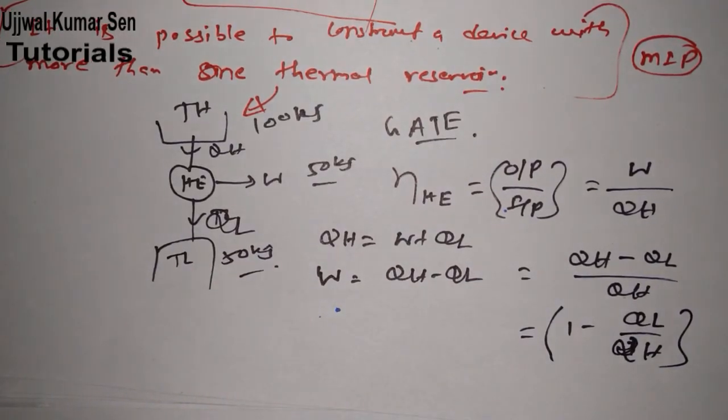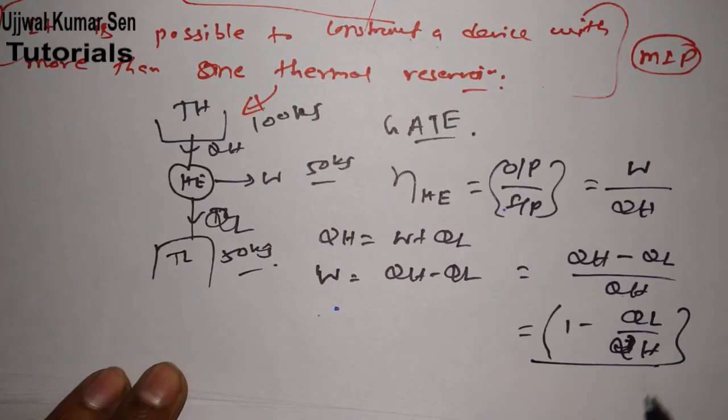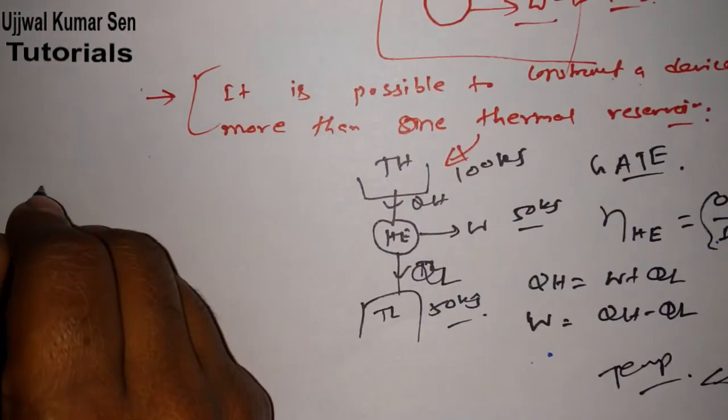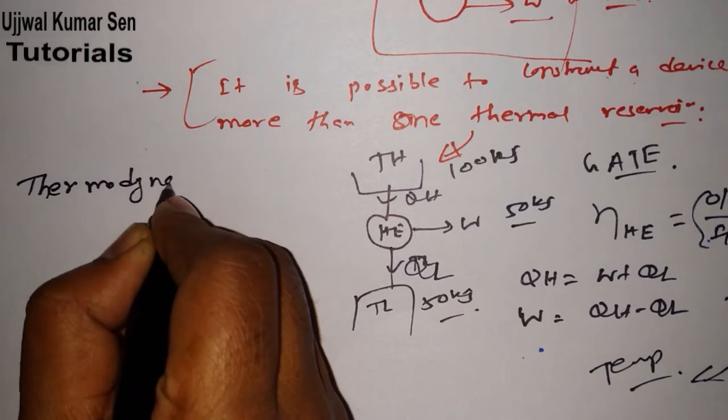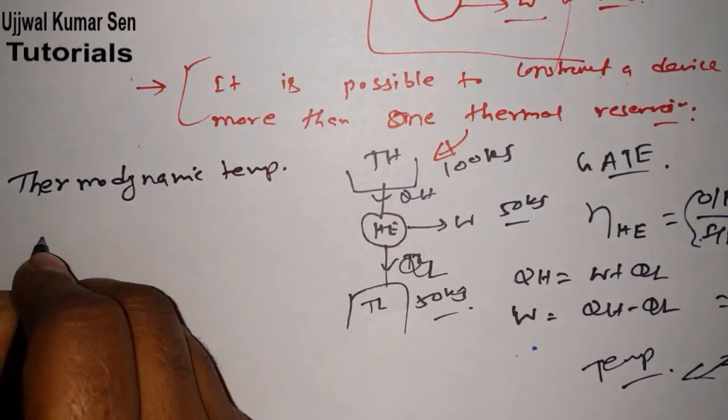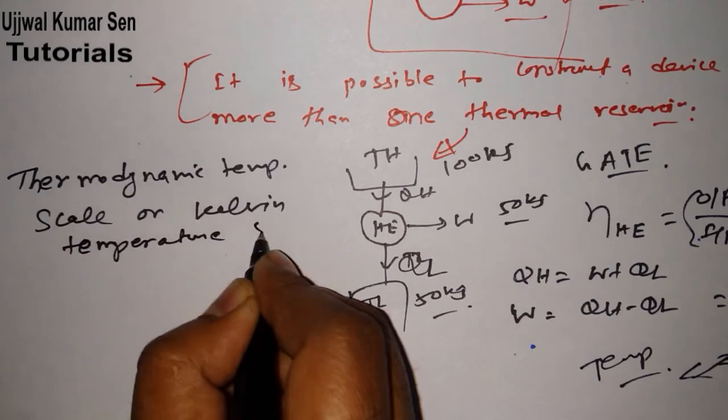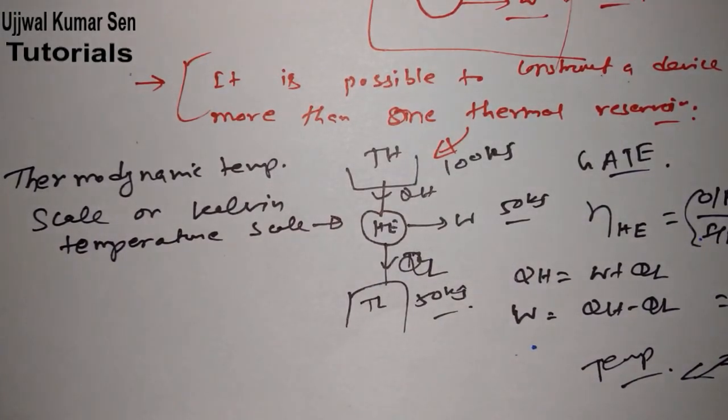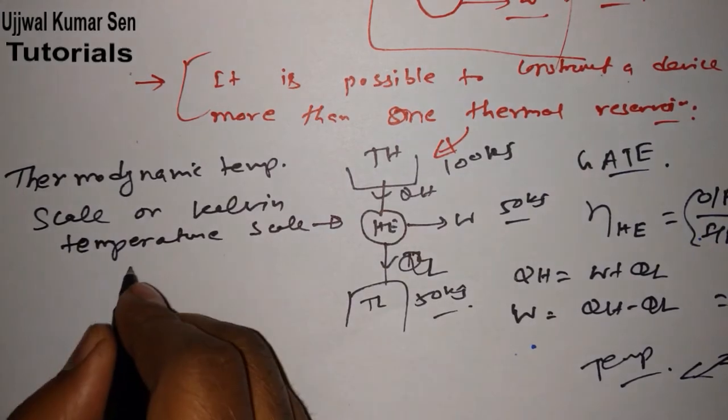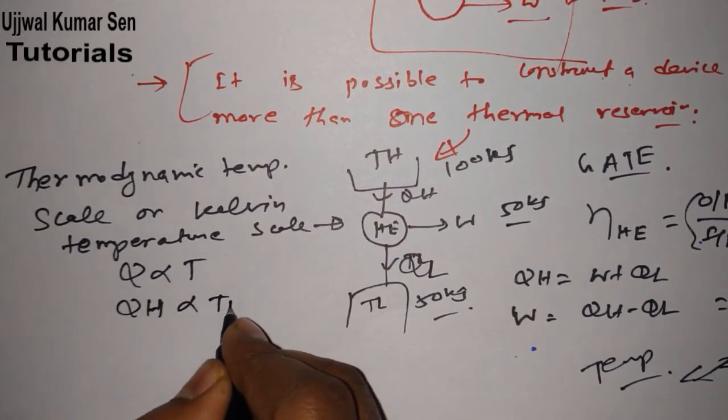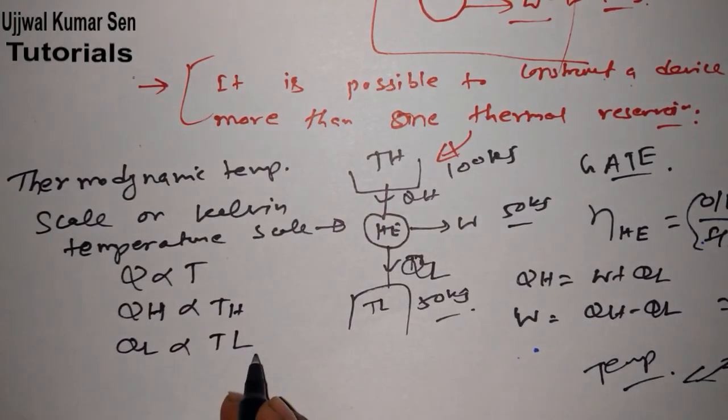Is equal to 1 minus QL by QH. Got it? Now if I wanted to get this information, this thing in terms of temperature, if I wanted to get in terms of temperature, then what will happen? How we can get it? We know that in case of thermodynamic temperature scale or we can say Kelvin temperature scale, we know that Q is proportional to T.